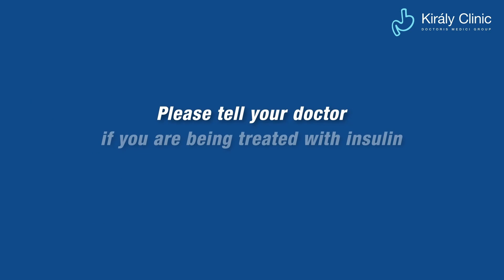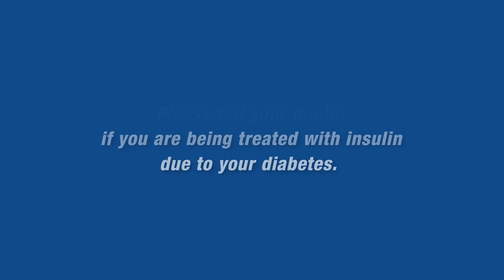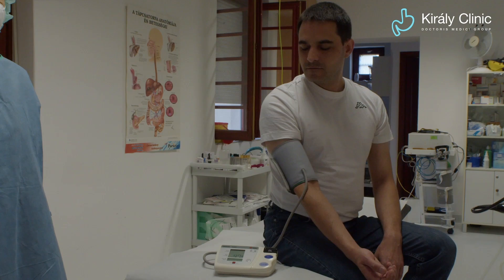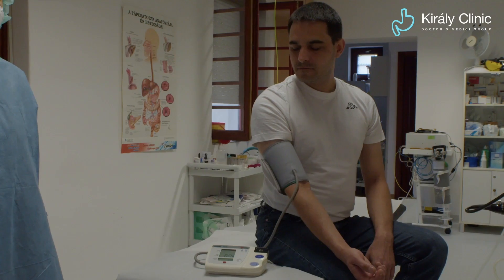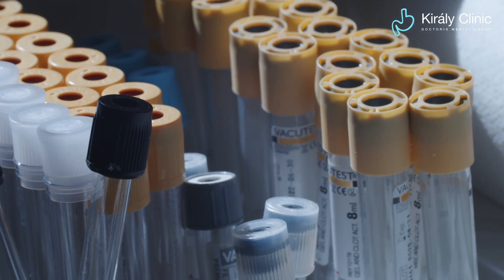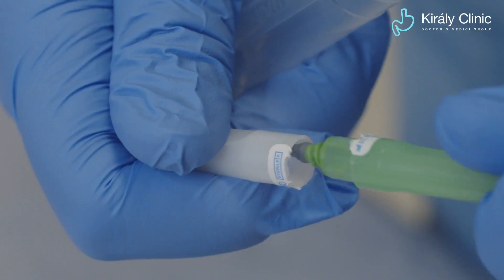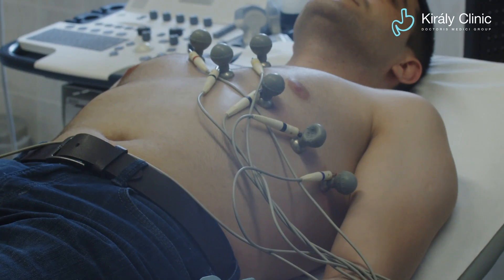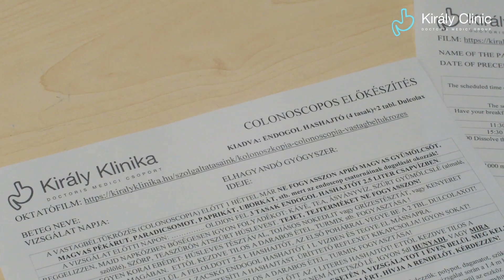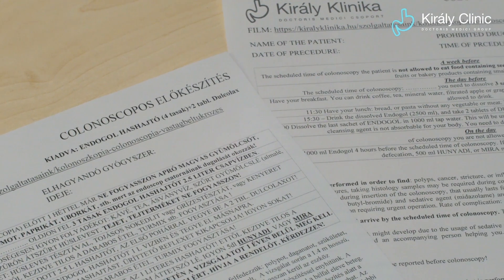Please tell your doctor if you are being treated with insulin due to diabetes. For preparing an anesthesia, an ECG is performed, blood is taken for laboratory tests, and blood pressure is measured. You are examined by an internist and then by the anesthesiologist. You will receive an information sheet on how to prepare for the test — please read this carefully and follow it exactly.